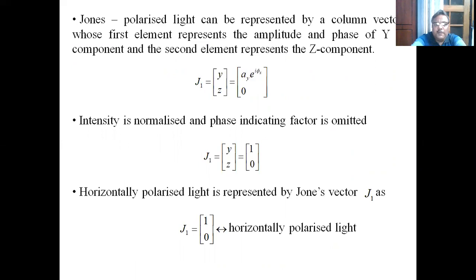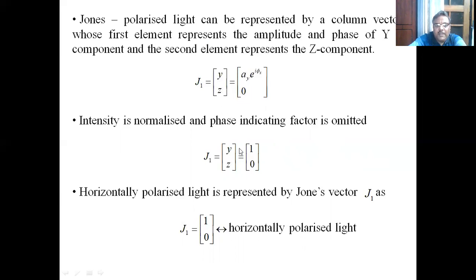Jones stated that polarized light can be represented by a column vector whose first element represents the amplitude and phase of the y-component and the second element represents the z-component. The y displacement is the first element, and since there is no z displacement, it is zero. When we normalize this matrix, the Jones vector corresponding to horizontally polarized light reduces to the column matrix [1, 0].